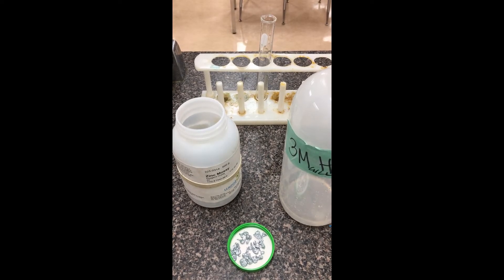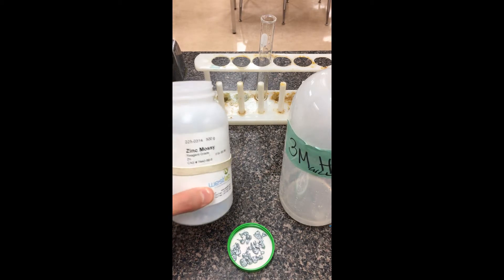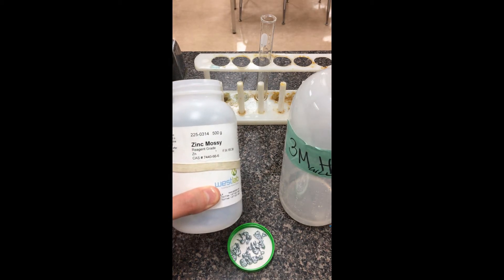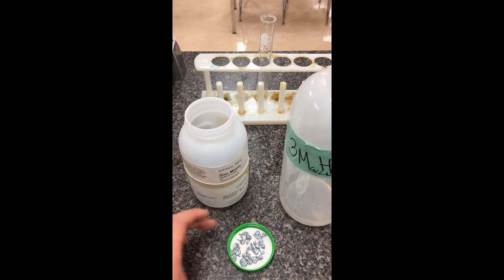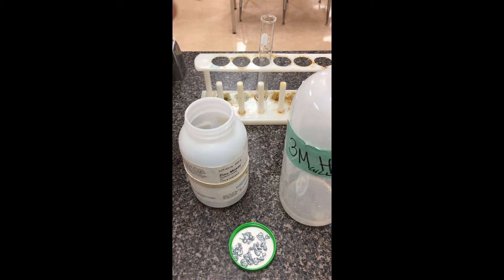Alright, continuing with our reactions lab here. This is station number six. This is going to involve taking a piece of zinc - zinc is a metal, a solid here. I already have a few chunks on the lid. I'm going to pour these chunks into the test tube, and we're going to watch what happens as I drop acid onto this metal.